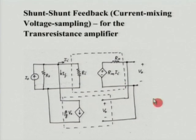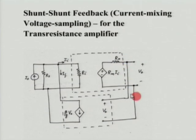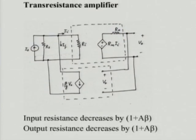In summary, in a shunt-shunt feedback amplifier, the input resistance decreases by (1 + Aβ) and the output resistance also decreases by (1 + Aβ). I will spend another 10 minutes on the feedback topologies before going to the second topic, which is oscillators.